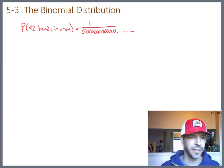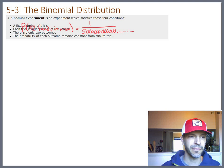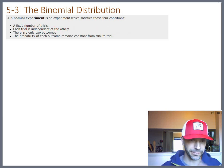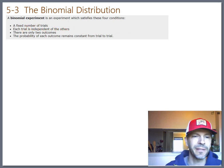But let's talk about, first of all, what it takes to actually be binomial. Because not everything in the world can be analyzed using this technique. So there's four requirements. So a binomial experiment is an experiment which satisfies these four conditions.